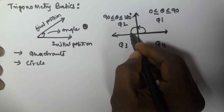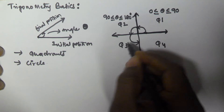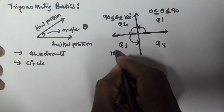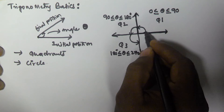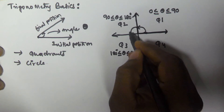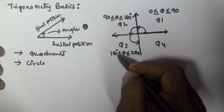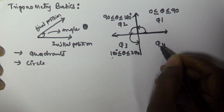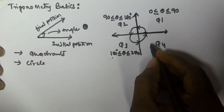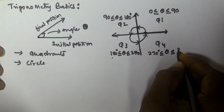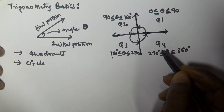In the third quadrant, if the line is moving from the initial position into that region, the angle is between 180 to 270 degrees. And in the fourth quadrant, from here to here, the angle is going to be between 270 degrees to 360 degrees. Based on the quadrant, we can calculate the value of the angle.